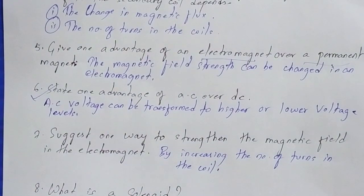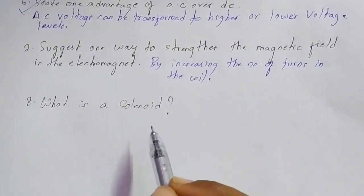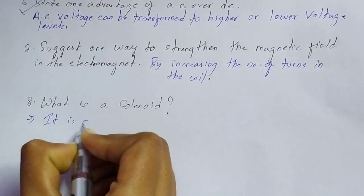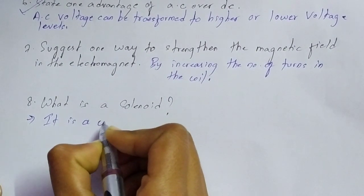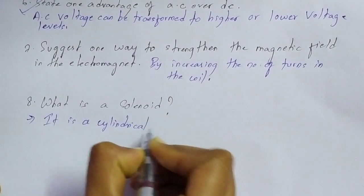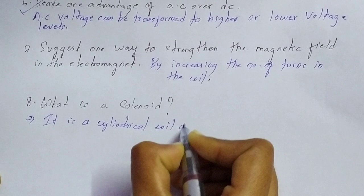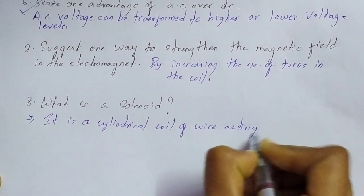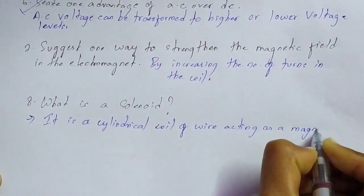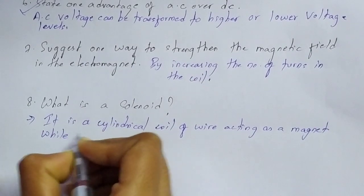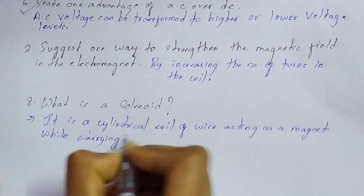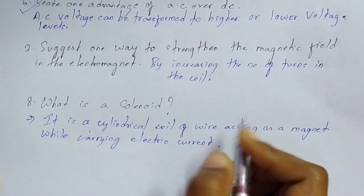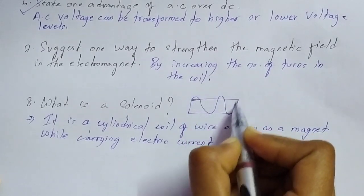Question number eight: what is a solenoid? A solenoid is a cylindrical coil of wire acting as a magnet while carrying electric current. This is the definition of a solenoid, and it looks like a cylinder with wires wrapped around it.